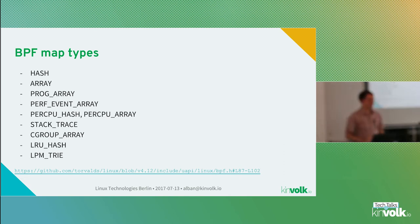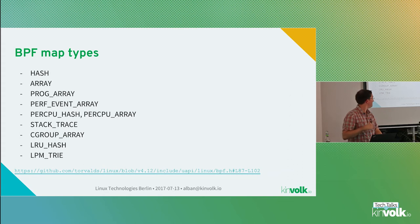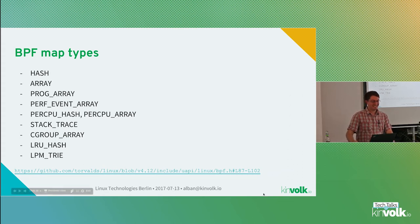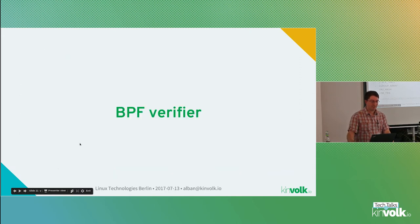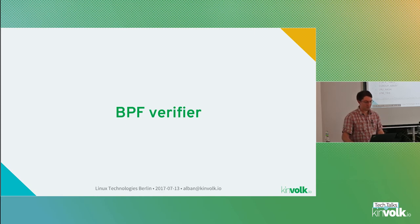There are different kinds of BPF maps: a generic hash table, an array where you can index by integer, and other specialized maps — for example, to capture the stack traces of a program. There are other types not covered today.